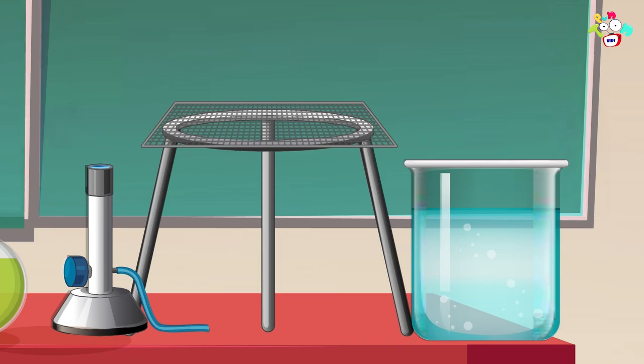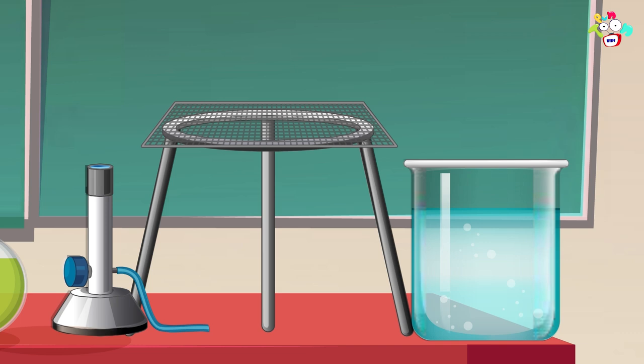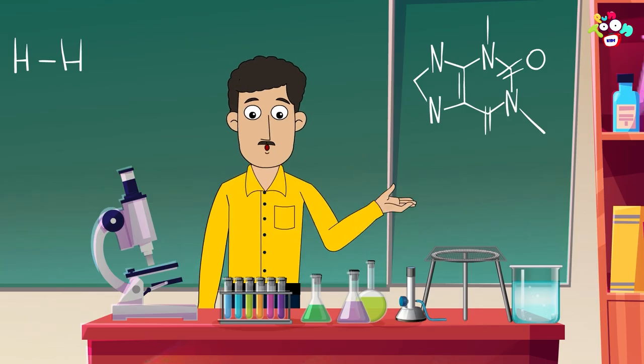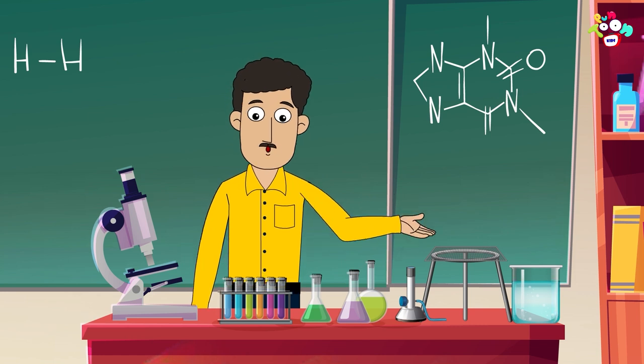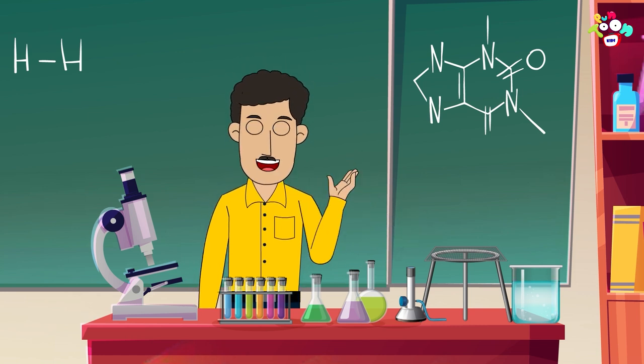Now look at this. This is a tripod stand. It has three legs. Hence, it is called a tripod. A net is placed on the top of it. And a lamp is lit below. Wait. Let me show you how.